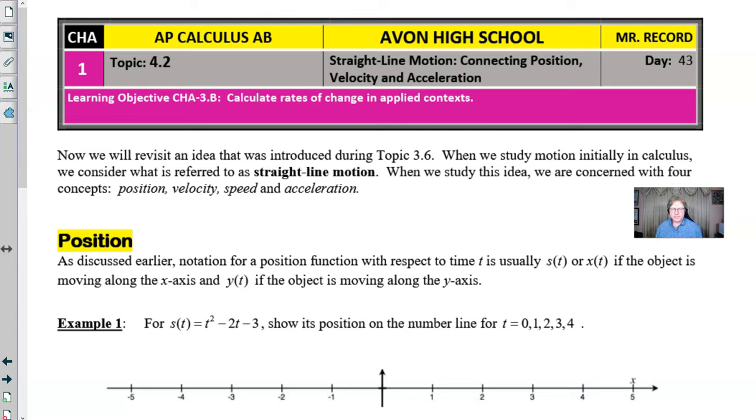So let's talk about position. Notation for position functions with respect to time is usually represented by s(t) or x(t). The s(t) is kind of strange, it comes from Latin, but x(t) is probably more common because these particles will tend to move along an x-axis. If an object happens to move along a y-axis, then we might use y(t), but we know our particles are going to move on a straight line.